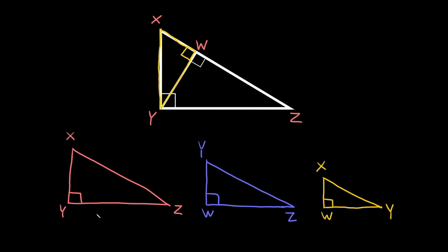So now that we have our three triangles set up now we can write our similarity statement. We can say that triangle XYZ is similar to triangle YWZ, and that's congruent to the last triangle which is XWY.